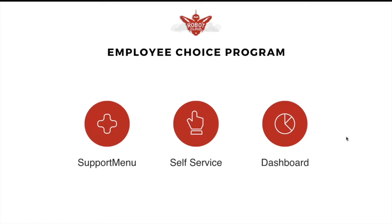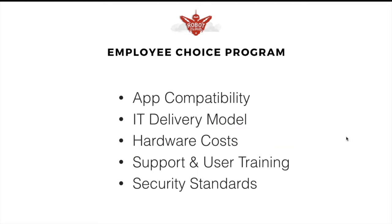A few items to consider when building your own employee choice program. First, app compatibility: are the apps you're currently running on Windows going to be compatible on the Mac? A great way to assess this is to first enroll your existing Macs into a system like Robot Cloud so you can see the app inventory and versions — are they running Office 2011 or Office 2016? Then look at what applications are being used on the Windows side and how they'll translate to Mac. Will they work in a web browser, or will you need terminal services or a virtual Windows machine? If all applications absolutely have to live in Windows, then an employee choice program is probably not for you.